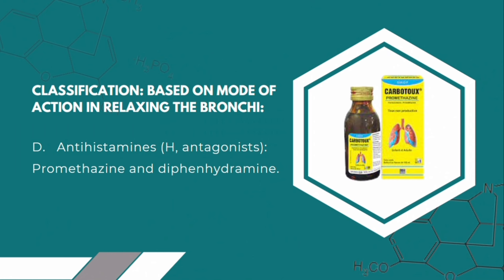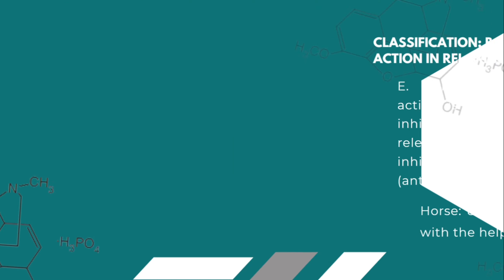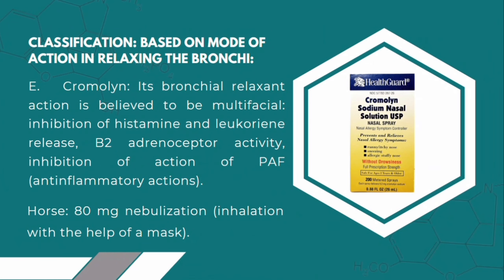Class D: Antihistamines or H1 antagonists. Examples are promethazine and diphenhydramine. Class E: Mast cell stabilizers. Example: cromolyn. It inhibits the calcium influx into the mast cells, which prevents mast cell degranulation and the release of histamine and other mediators. It is used in horses at 18 mg by inhalation with the help of a mask.